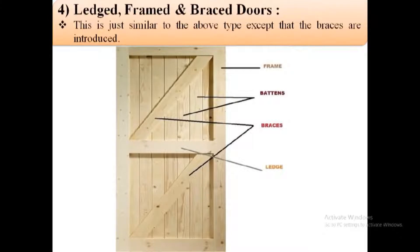Battened, ledged, braced, and framed doors. This door consists of two styles, three ledgers, and two braces. It is provided with braces which run diagonally between ledges to increase the strength, durability, and for giving more good appearance of that door.